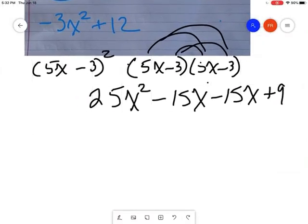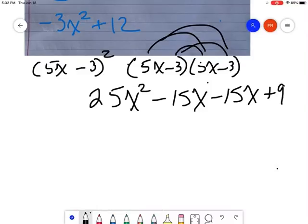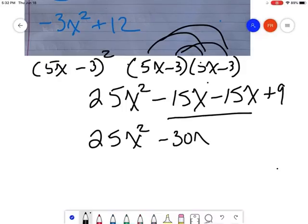So now let's take a look at what we can do here. We have to combine our two terms in the middle. I'm going to be left with 25x squared minus 15 minus 15. So remember, if I owe you 15 and I borrow another 15, now I owe you 30. So that's minus 30x and then plus 9.